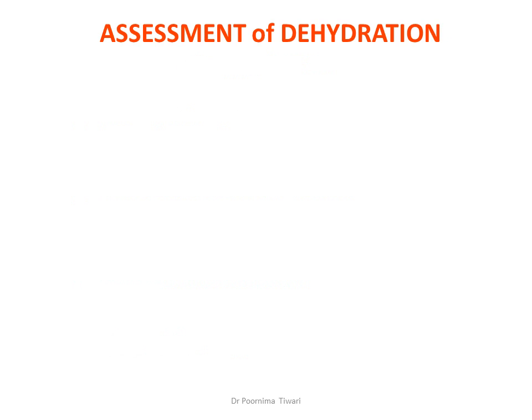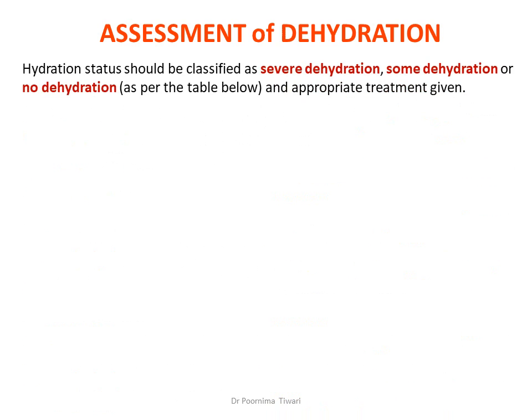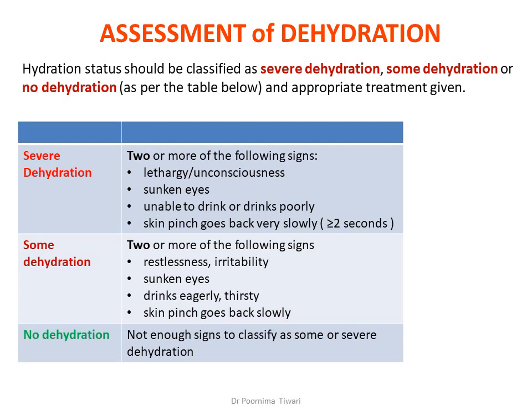The first principle is rehydration. We need to assess the hydration status of the patient with diarrhea, classifying the level of dehydration as per the table given. We classify the patient as having severe dehydration, some dehydration, or no dehydration — and provide rehydration therapy appropriately.